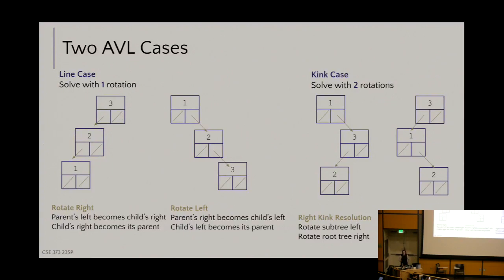Let's get back into trees. We left off on Monday with AVLs — these are the four cases, really just two cases with mirror images: subsets of nodes that cause imbalance. There's the line case, where we have three things all in the same line, and the kink case, where three things stem from one subtree but involve both a left and a right. The line case takes a single rotation to resolve; the kink case takes two rotations.